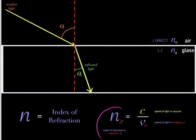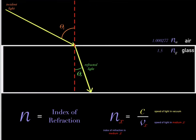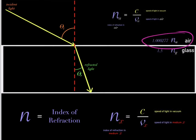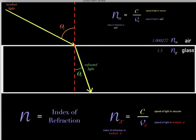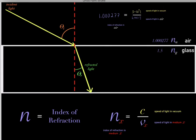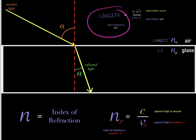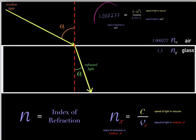How do you determine the index of refraction of a certain medium? To determine the index of refraction for medium X, you take the speed of light in a vacuum and divide it by the speed of light in that medium. For example, the index of refraction of air equals the speed of light in a vacuum divided by the speed of light in air. The speed of light in a vacuum is 3×10⁸ meters per second, and the speed of light in air is 2.997×10⁸ meters per second. Therefore, the index of refraction of air is 1.000277.